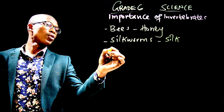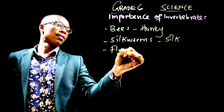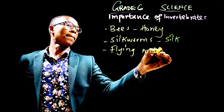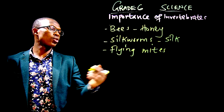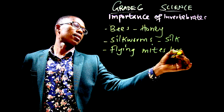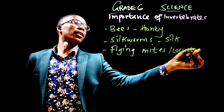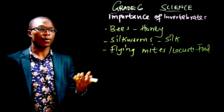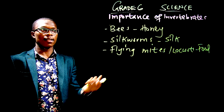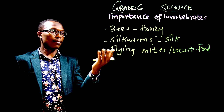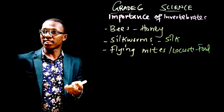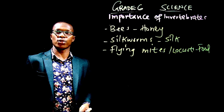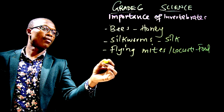Another one, we also have the flying mites, or we can also have locusts. All these are normally eaten in some communities. Some communities normally eat mites, and some normally eat locusts. In fact, they fry it as food and they eat it. So that is also a form of food.